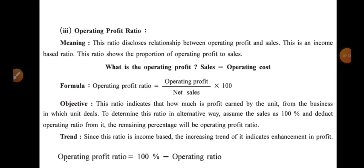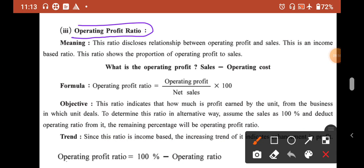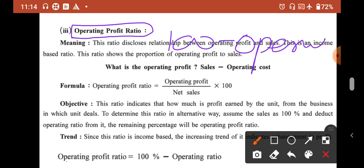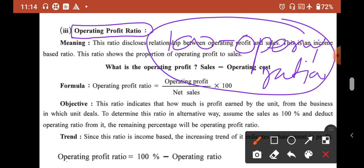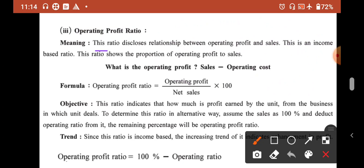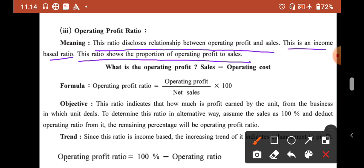Next is operating profit ratio. Operating profit ratio discloses the relationship between operating profit and sales. This is an income-based ratio. This ratio shows the proportion of operating profit to the sales.